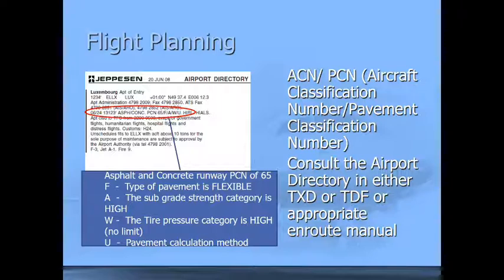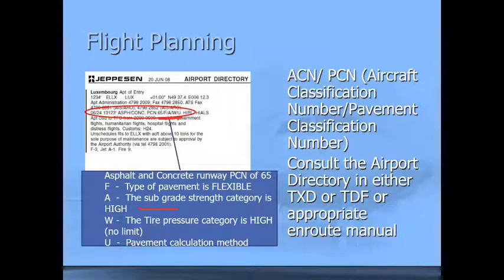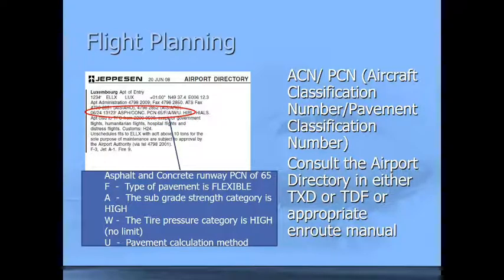For this airport example, we see that the pavement classification number is 65. We also get some information about the type of pavement — it's a flexible pavement with high subgrade strength. Our tire pressure category is high with no limit on it. As the dispatcher, especially in the planning stage, we have to make sure our airplane will be compatible with this.